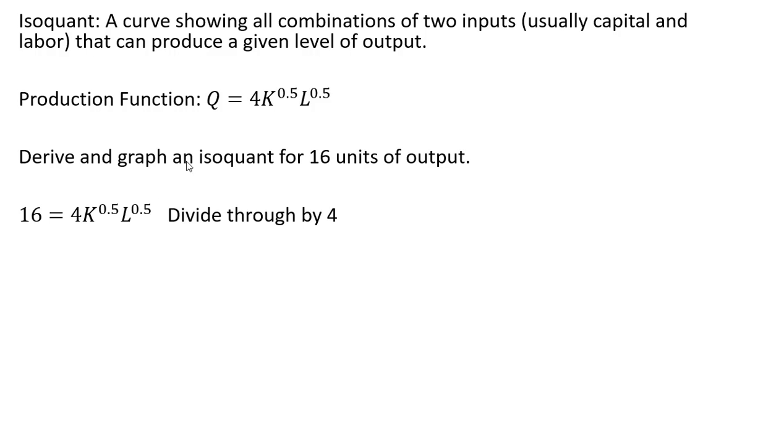The first step here is to set Q equal to 16. If we wanted to derive an isoquant for 100 units of output, we'd just set this equation equal to 100, but here we're just doing 16. I could have picked any value.